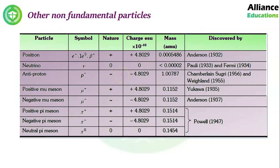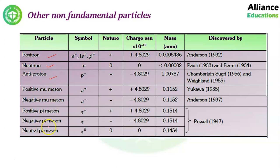There are other non-fundamental particles also found in the nucleus. You should just know their names: positron, neutrino, anti-proton, and mesons — different types of mesons are given here. These are some of the non-fundamental particles.